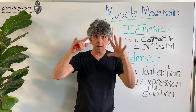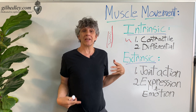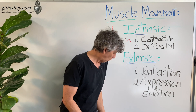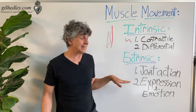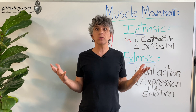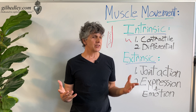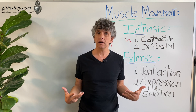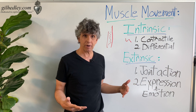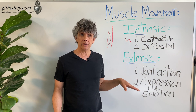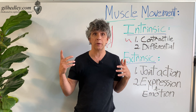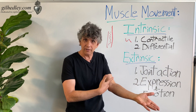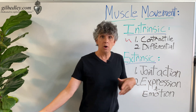When those muscle fibers contract, bones move through space — that's an extrinsic expression of the movement property of muscle tissue. Our joints move through space. This allows us to express ourselves: our entire emotional life, our way of communicating, gesticulating, and embodying emotion is a function of the extrinsic properties of muscles moving joints through space.